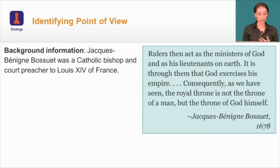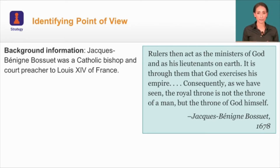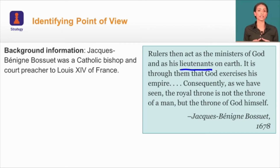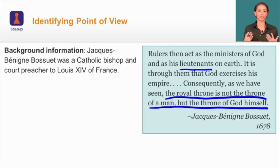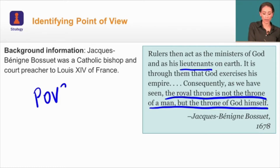One of his primary advisors, a Catholic bishop and court preacher who reported directly to Louis XIV, Jacques-Bénigne Bossuet, said in 1678: 'Rulers then act as the ministers of God and his lieutenants on earth. It is through them that God exercises his empire. Consequently, the royal throne is not the throne of a man, but the throne of God himself.' When he uses the word 'lieutenants,' he's saying they are God's assistants on earth, and the king is not on par with men — he is equivalent to God.